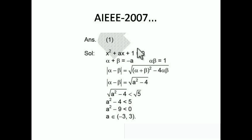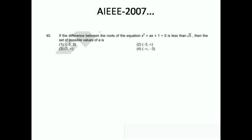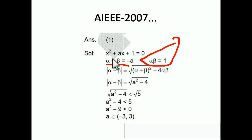Alpha minus beta equals the square root of (alpha + beta)² minus 4·alpha·beta. We derive this because (alpha minus beta)² = alpha² + beta² - 2·alpha·beta. We do this because we already know the values: alpha + beta is the sum of roots, which equals -b/a = -a/1 = -a. And alpha·beta is c/a = 1/1 = 1.